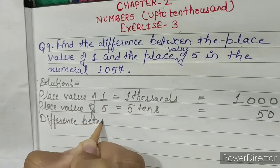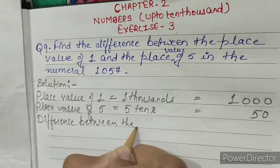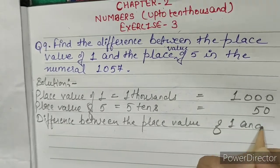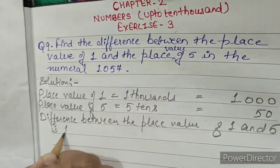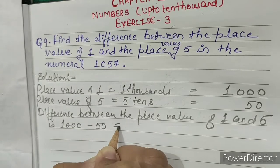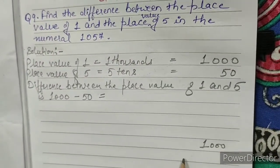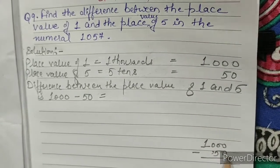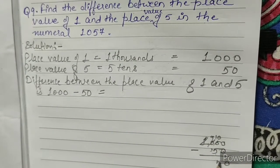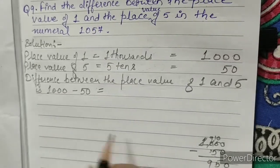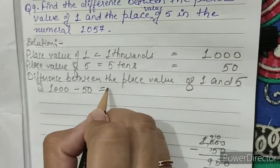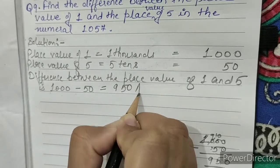Difference between the place value of 1 and 5 is 1,000 minus 50. 1,000 minus 50: 0 minus 0 is 0, 10 minus 5 is 5, 9 we'll write as it is. So the difference between the place value of 1 and 5 is 1,000 minus 50 equals 950. This is our answer.